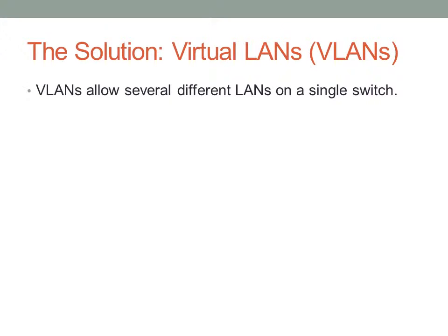VLANs allow several different LANs on a single switch. I can segregate, on a 24-port switch, the first eight ports into VLAN 1, the second eight ports into VLAN 2, and the last eight ports into VLAN 3. The ports on VLAN 1 would not be able to talk to any devices on VLANs 2 or 3, and the same goes for VLANs 2 or 3.